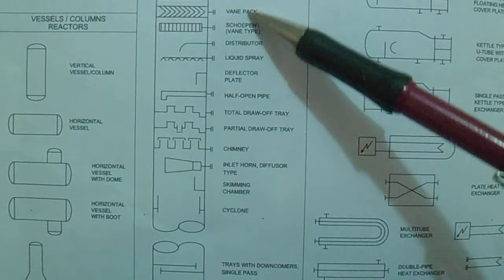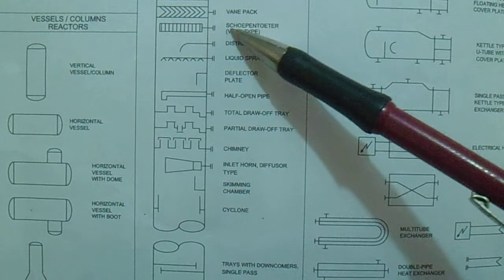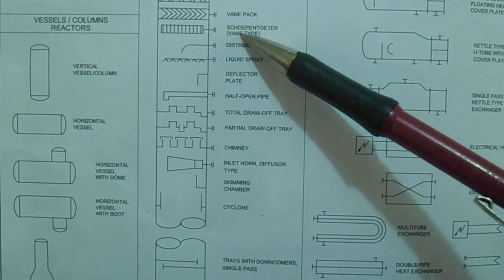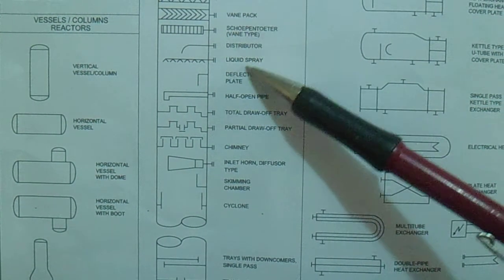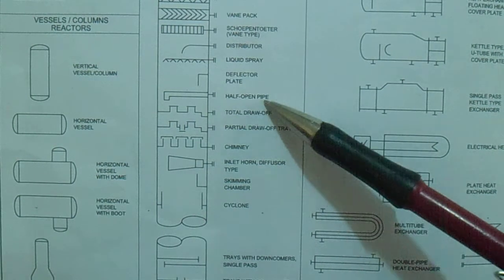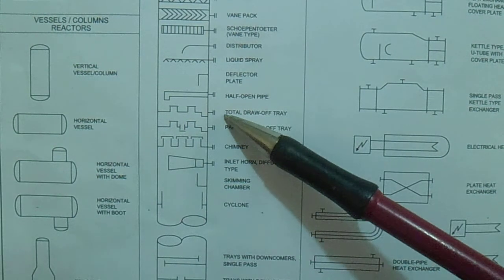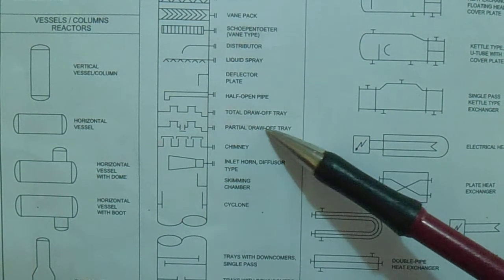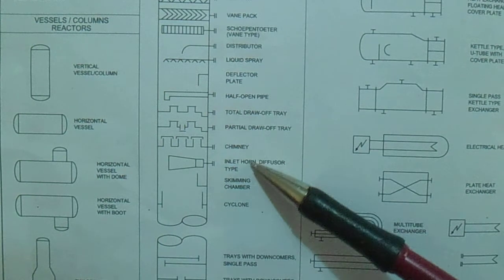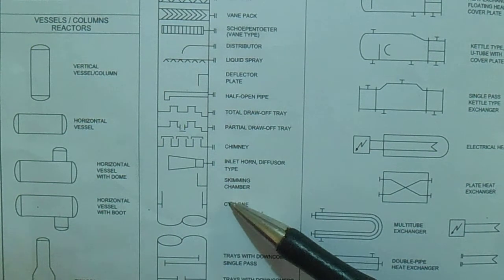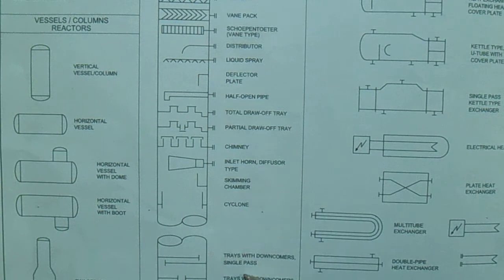Continuing with internals, we have: swirl deck, mist mat, baffle, baffle-type distributor, liquid spray deflector plate, half-open type, total drawoff tray, fire shell drawoff tray, chimney tray, inlet horn, skimming chamber, and cyclone.